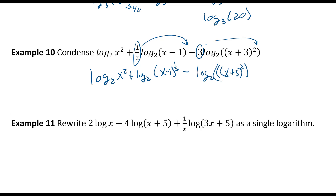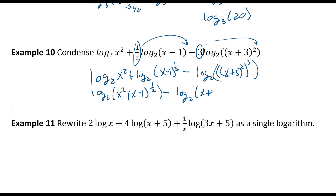Applying the product property, the added logs combine to give log base 2 of x squared times x minus 1 to the one-half. Then subtracting log base 2 of x plus 3 to the 6th power — since 2 times 3 is 6 — we can write this as a single logarithm: log base 2 of x squared times x minus 1 to the one-half, over x plus 3 to the 6th.